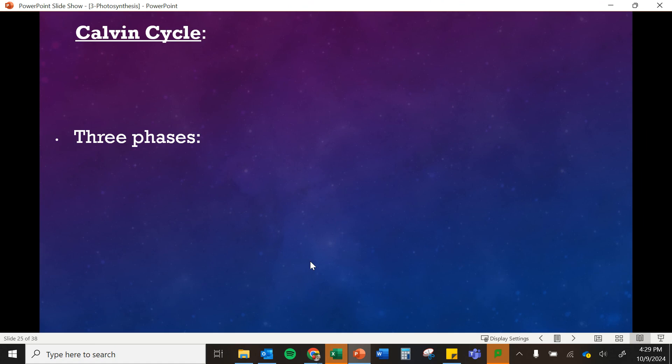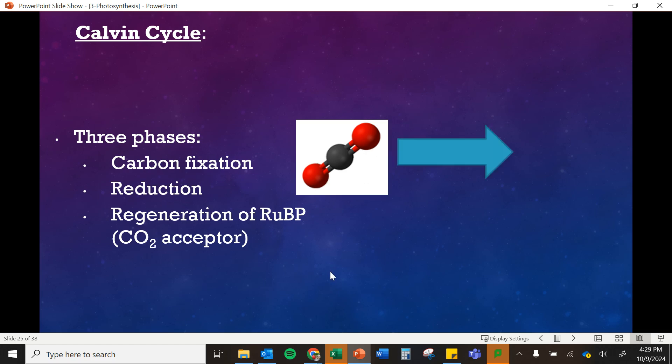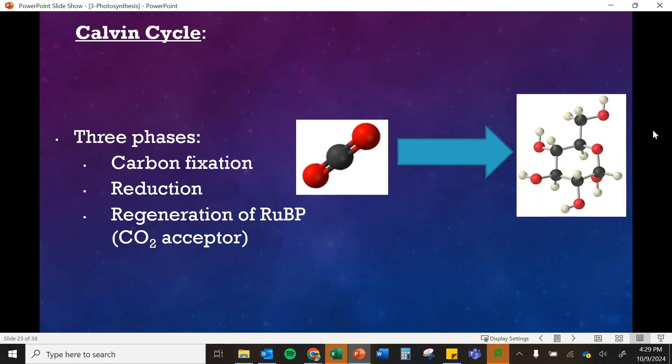So there are three phases of the Calvin cycle and we don't need to memorize the names, but it goes through a carbon fixation phase, a reduction phase, and then we generate something called RuBP, which is a carbon dioxide acceptor.